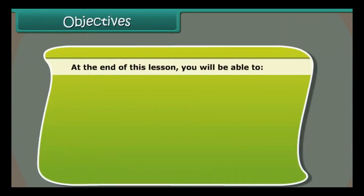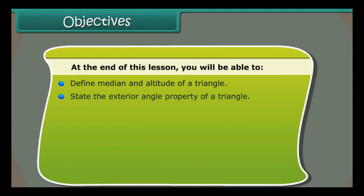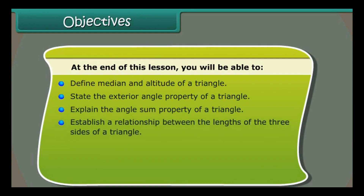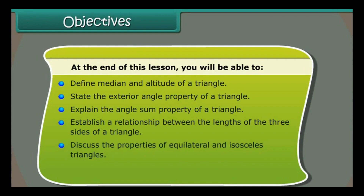Objectives: At the end of this lesson, you'll be able to define median and altitude of a triangle, state the exterior angle property of a triangle, explain the angle sum property, establish a relationship between the lengths of the three sides, discuss the properties of equilateral and isosceles triangles, and explain the Pythagoras property of a right-angled triangle.